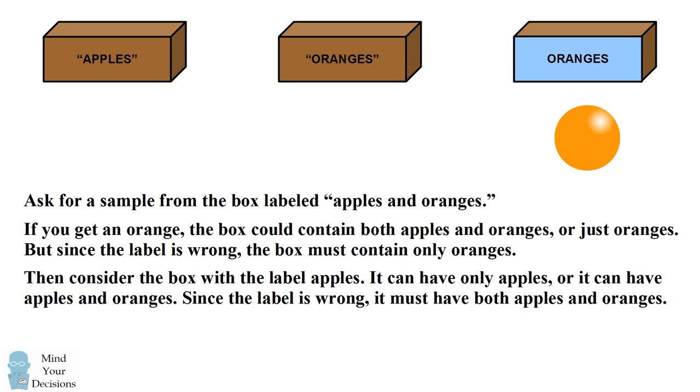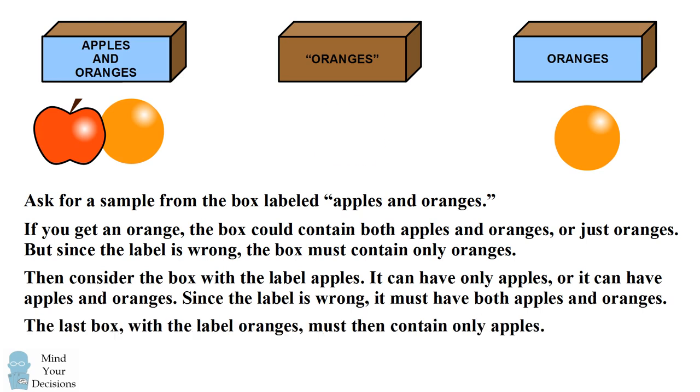You'd then consider the box that's labeled apples. You can deduce by process of elimination that this must contain both apples and oranges, and the final box must have the final label. So you can figure out all of the labels just by taking a sample from the correct box.